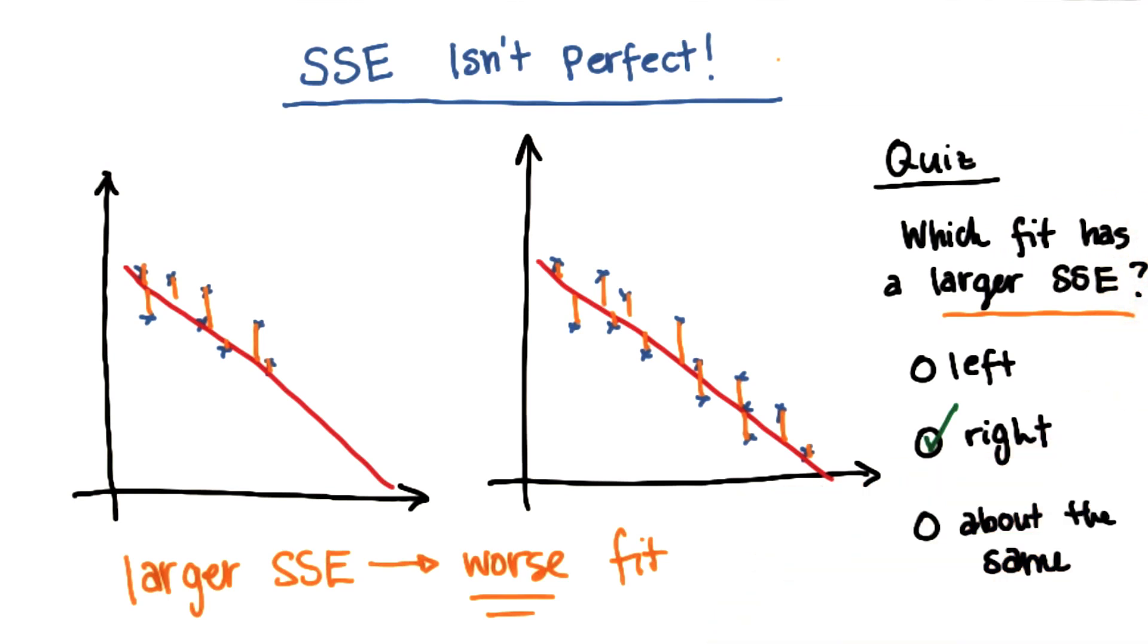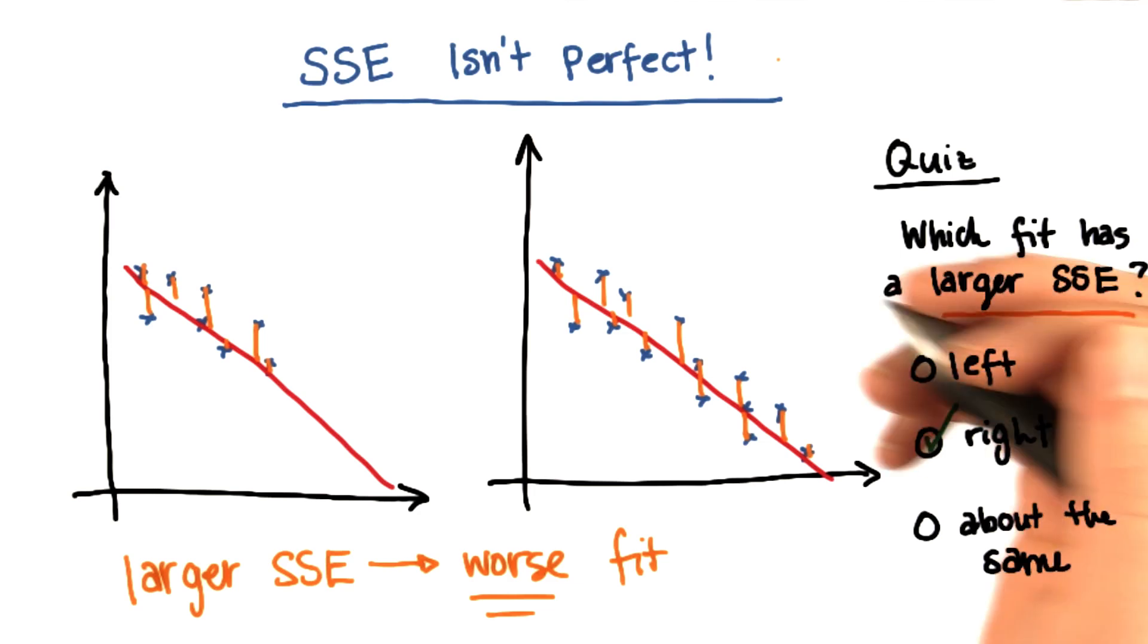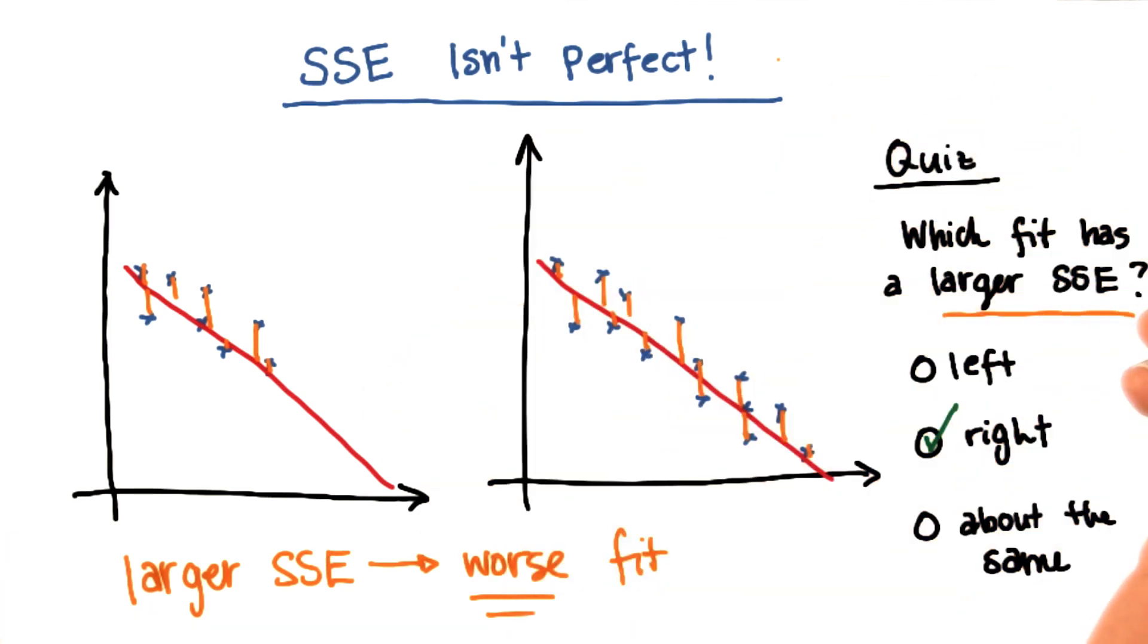However, if you're comparing two different sets of data that have different number of points in them, then this can be a big problem. Because if you're using the sum of squared errors to figure out which one is being fit better, then the sum of squared errors can be jerked around by the number of data points that you're using, even though the fit might be perfectly fine.